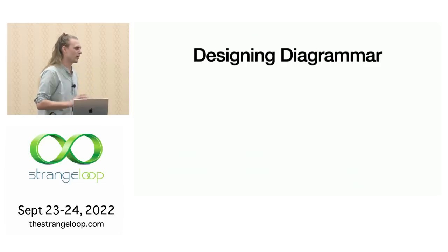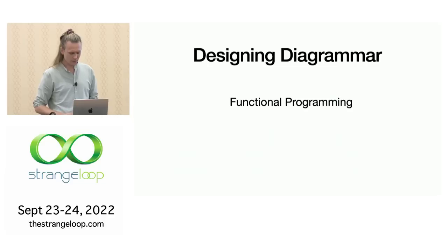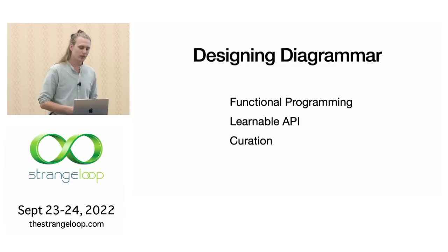Next, I want to talk a little bit about some considerations that went into designing Diagrammer, in particular to making it simple and approachable for people. I'm going to talk about functional programming and how that plays a role. I'm going to talk about making a learnable API and contrast it with other APIs that are less learnable. And I'm going to talk about curation, which is a principle that's been applied again and again in the design of Diagrammer.